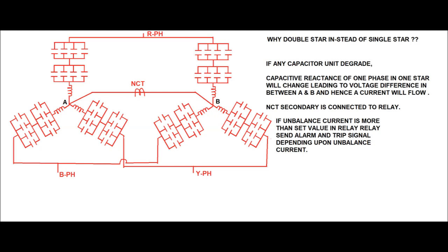The NCT secondary is connected to a relay called the neutral unbalanced current relay. If the sensed current exceeds the alarm setting, an alarm is sent to operating personnel to detect the faulty capacitor unit. If the current exceeds the trip preset value, it will trip the capacitor bank to avoid further damage. The function of the NCT is therefore to detect any unbalanced current due to a faulty capacitor unit.